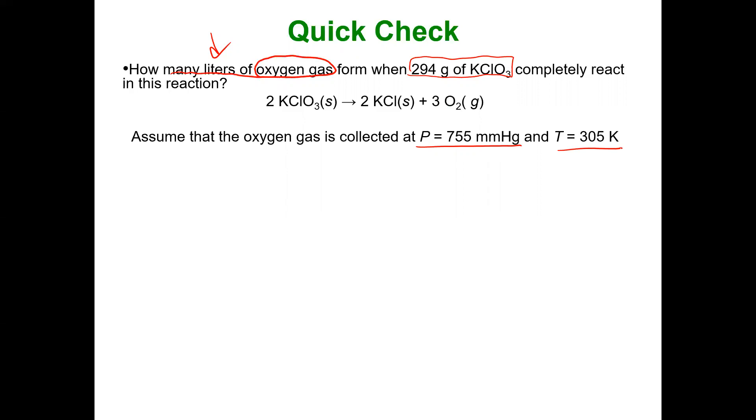So how can we perform the stoichiometry? Well for one we can convert the 294 grams of potassium chlorate to moles quite easily. And how can we do that? As we have always done we can use molar mass in the periodic table. There's 122.55 grams of potassium chlorate in one mole of potassium chlorate. Now we have moles of potassium chlorate.